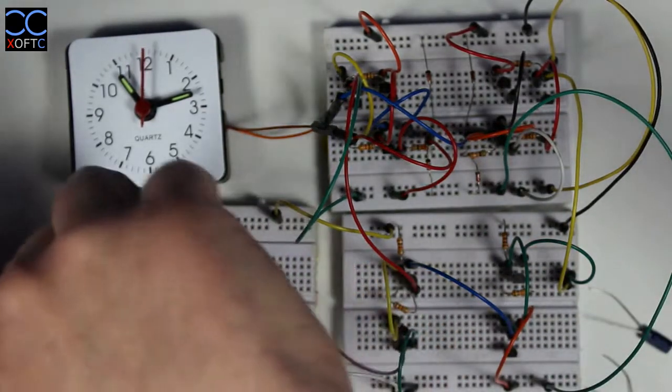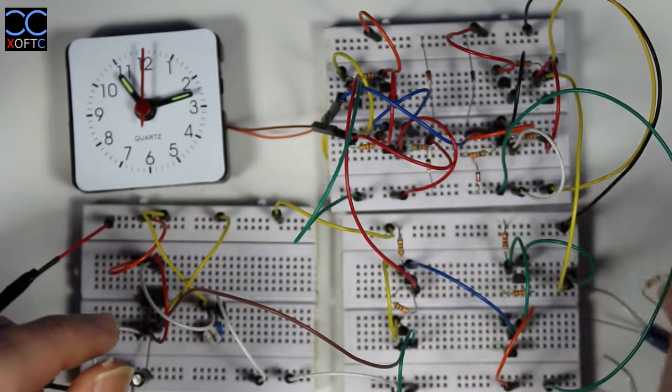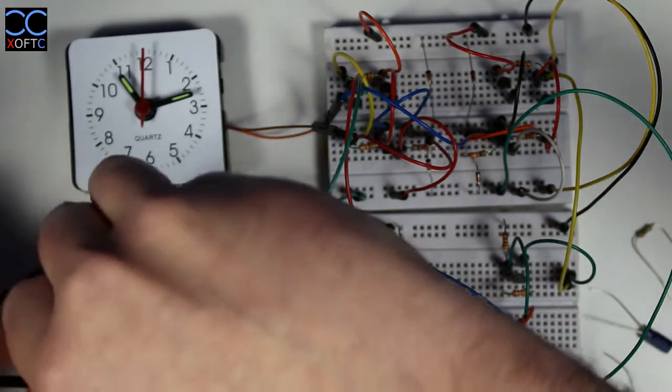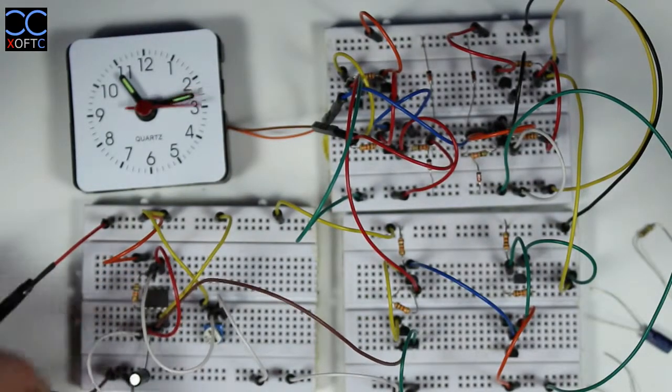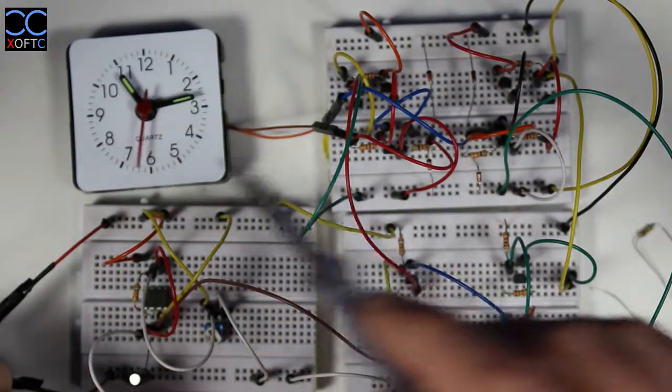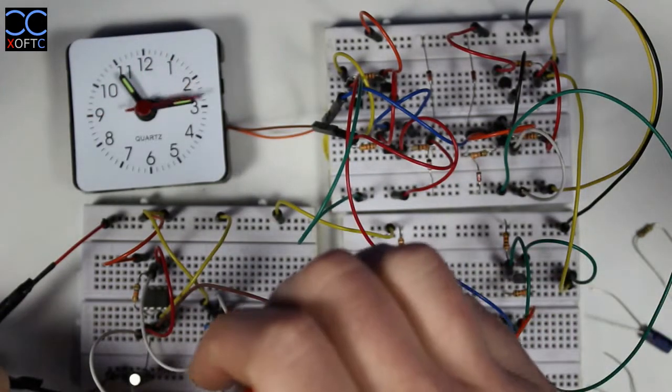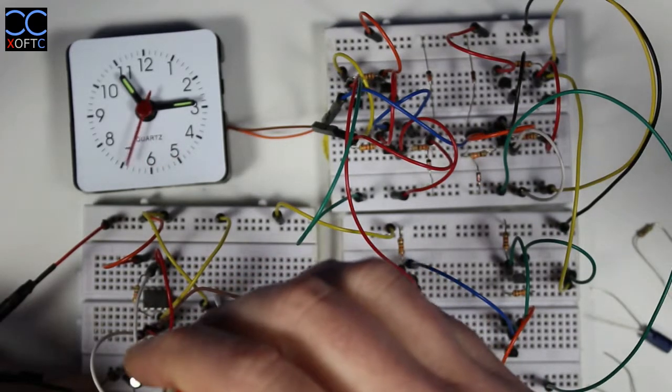Obviously you can play around with the components here. For example, if I would take this one megaohm resistor out and replace it with just 56k, you can see that already the motor behaves differently because we've changed the pulse frequency. Now we can make it go faster or slower.